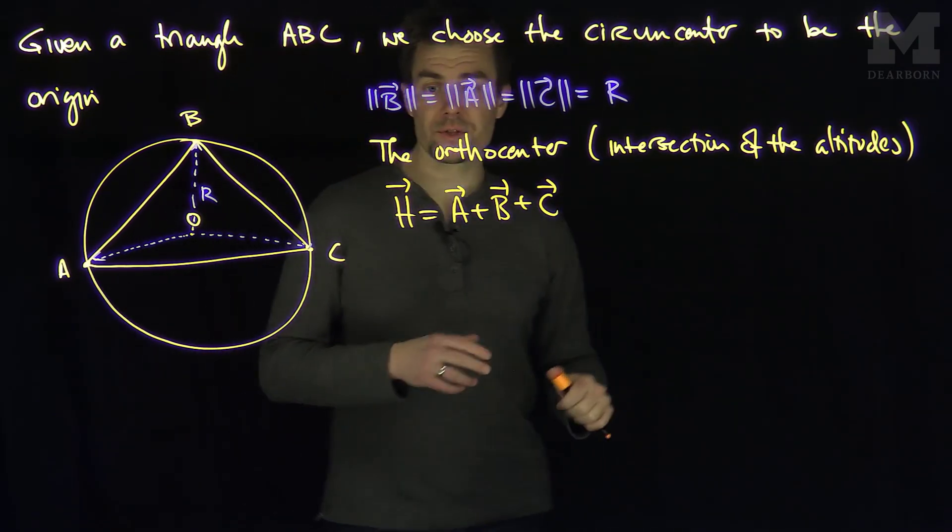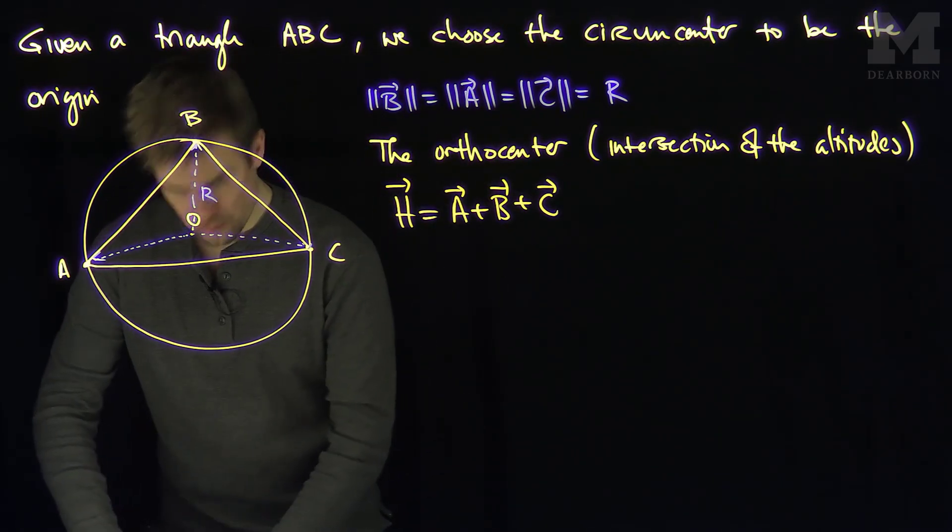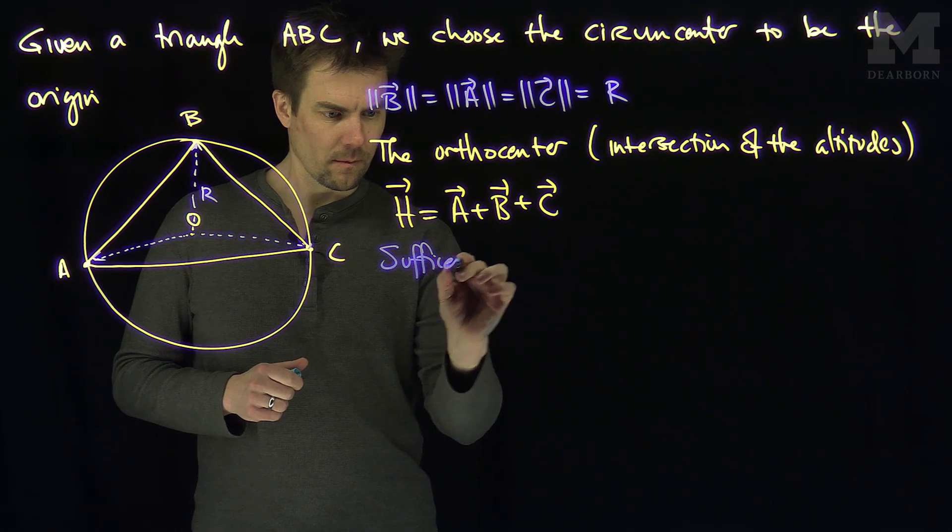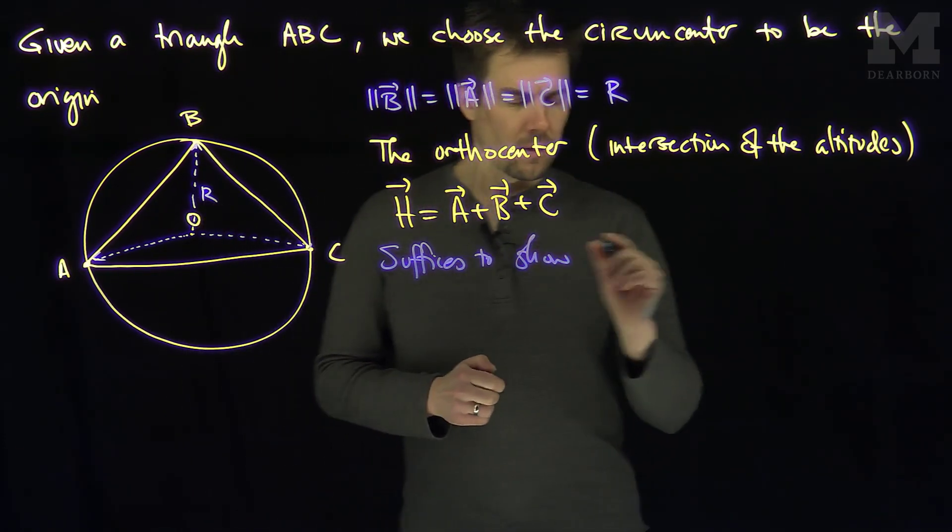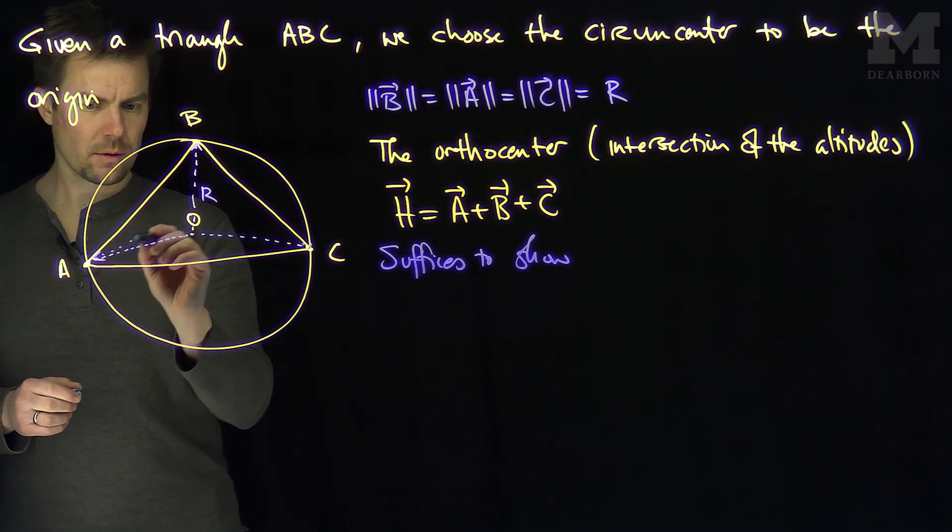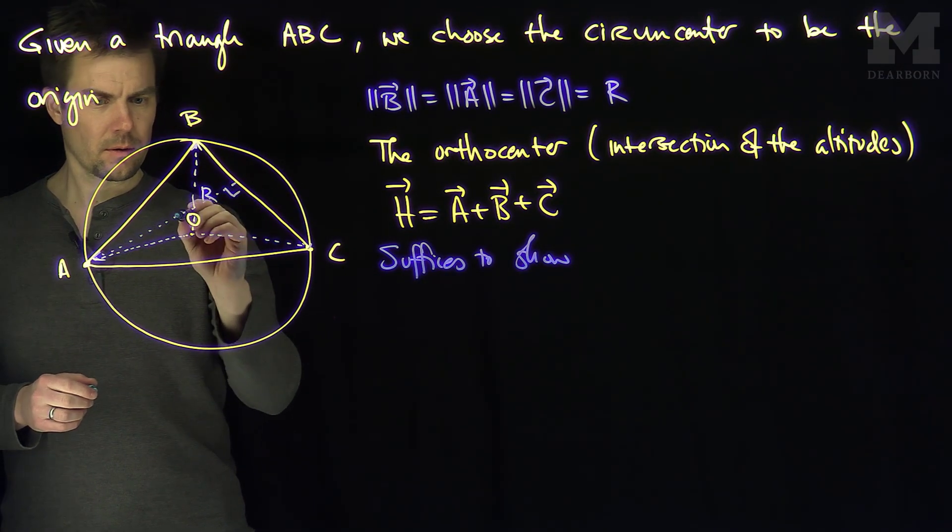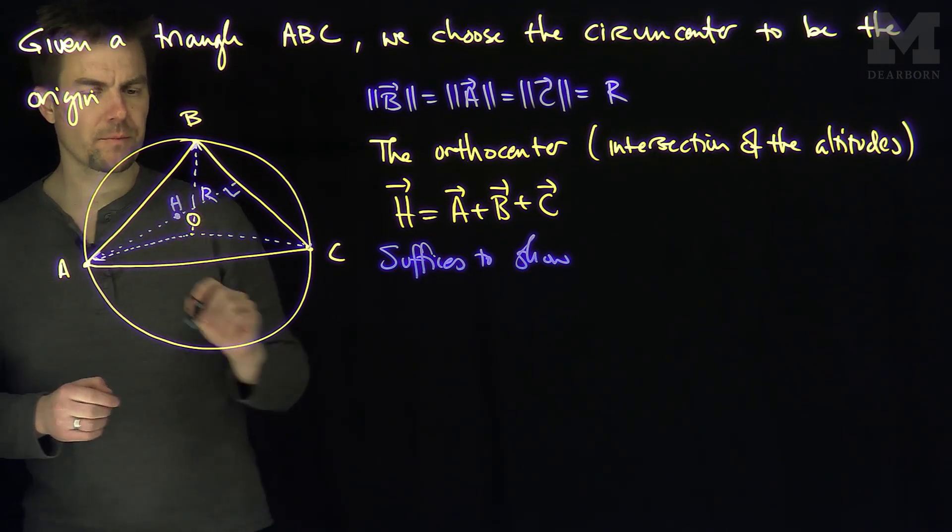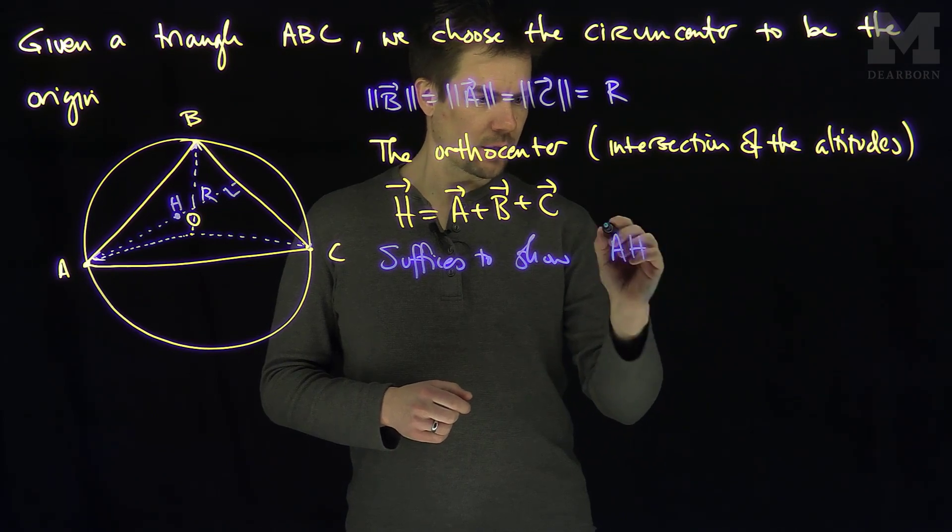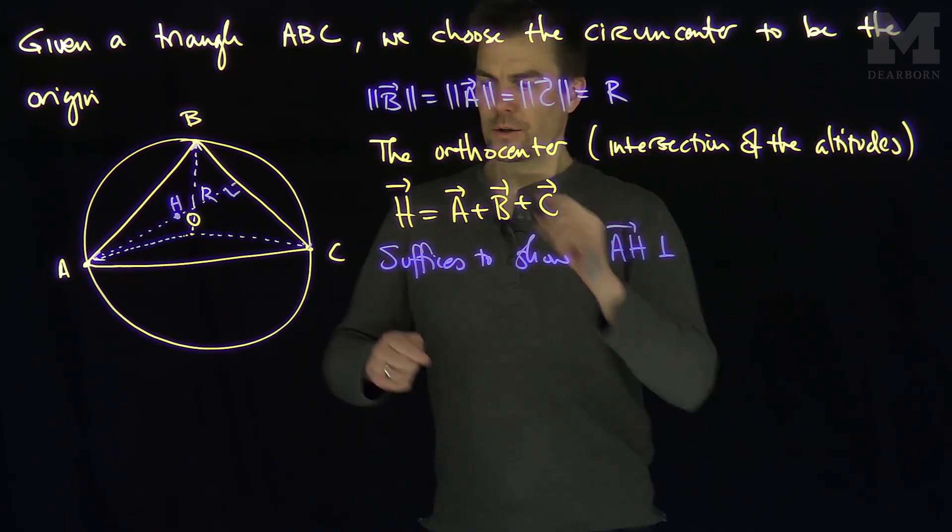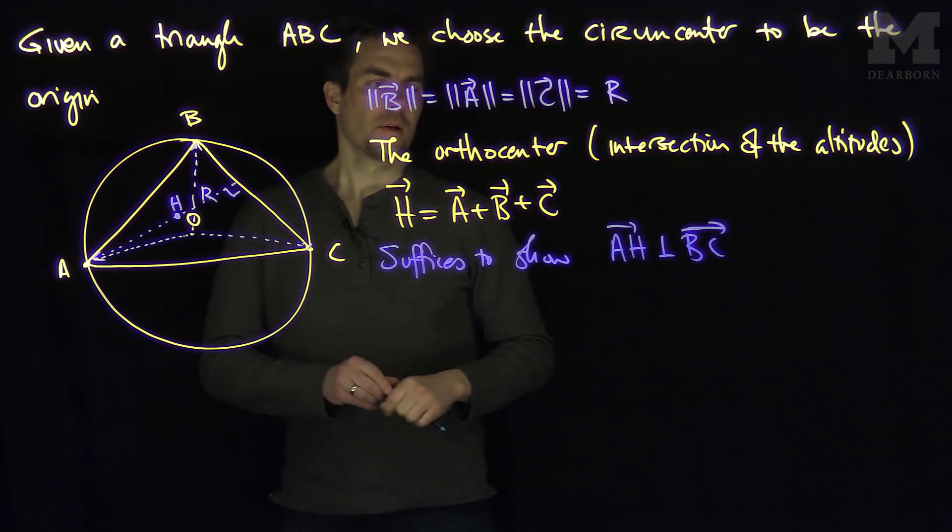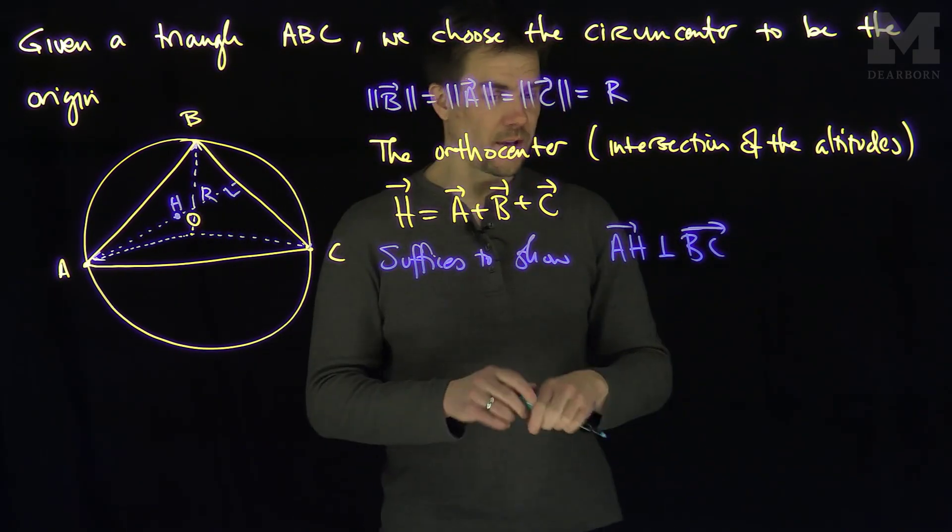So to show this is true, it suffices to show that if I look at AH, the vector A to H is perpendicular to BC, and with all the other relationships the same.